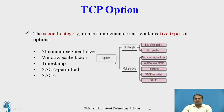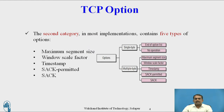This diagram shows the option types. As discussed, option is an extra field available to the user to add information. There are two types: single-byte and multi-byte. Single-byte contains end of option list and no operation. Multi-byte contains maximum segment size, window scale factor, timestamp, SACK permitted, and SACK.